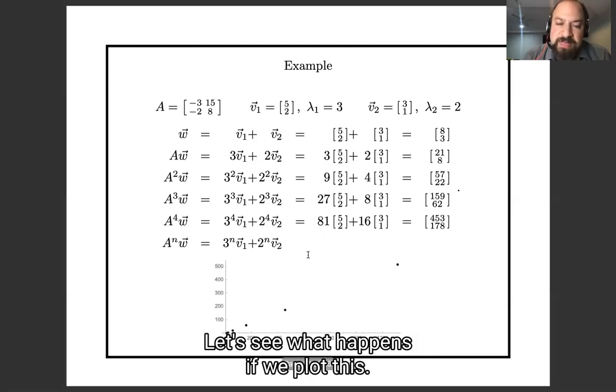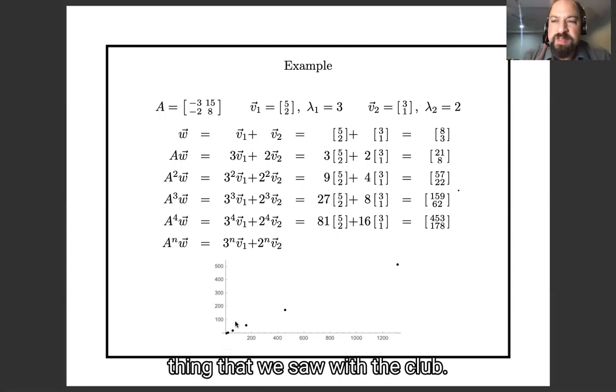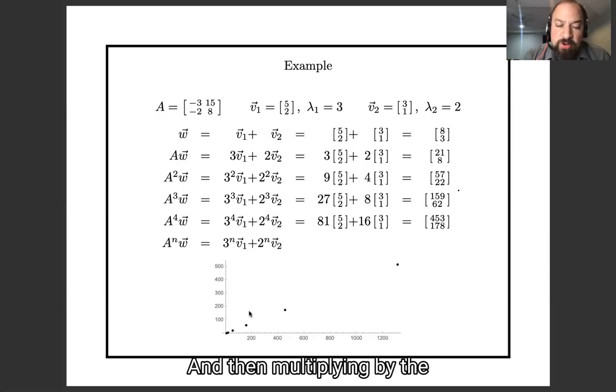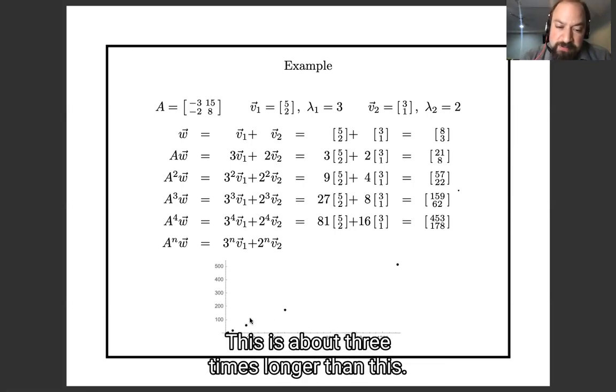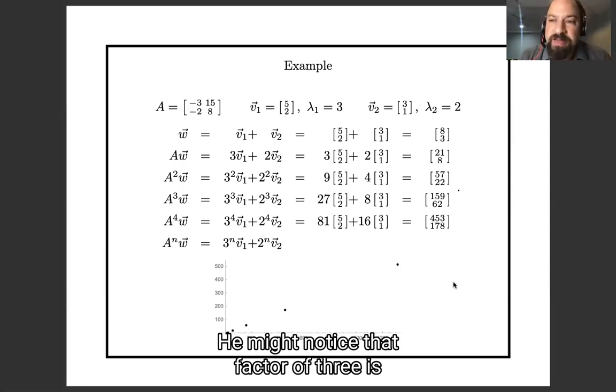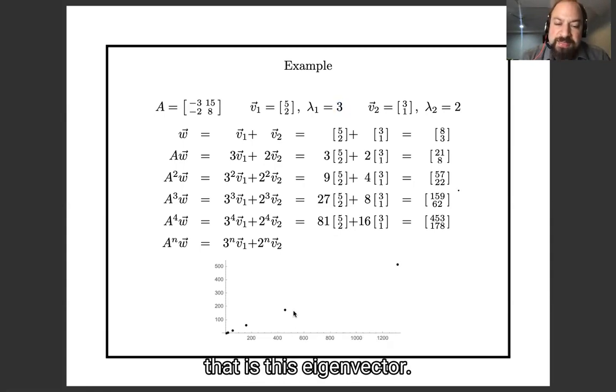Let's see what happens if we plot this. Here's a plot of those points: [8,3], [21,8], [57,22], and so forth. What I want you to notice is the same sort of thing that we saw with the club. The vectors look like they're lying roughly on a line. And this time it looks like that line has a slope of two-fifths. And they're multiplying by the same factor each time. This time the factor looks like about 3. This is about 3 times longer than this. And you might notice that factor of 3 is this eigenvalue and that two-fifths slope is this eigenvector.